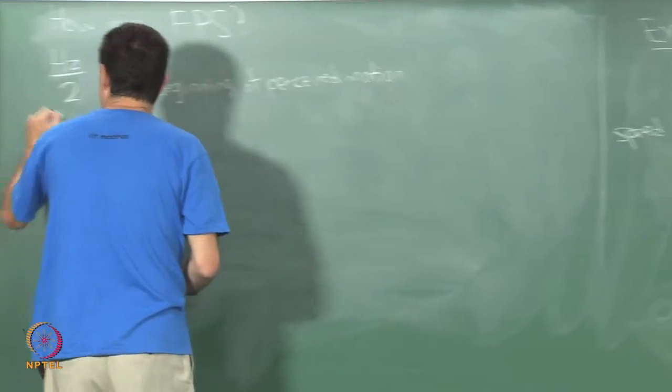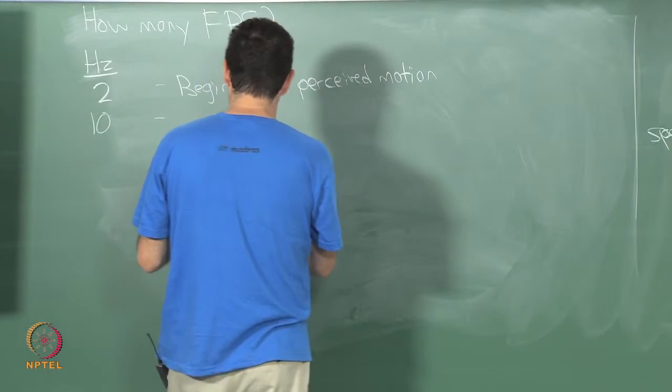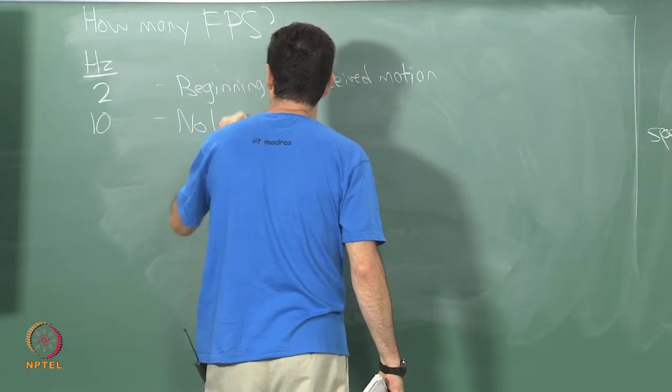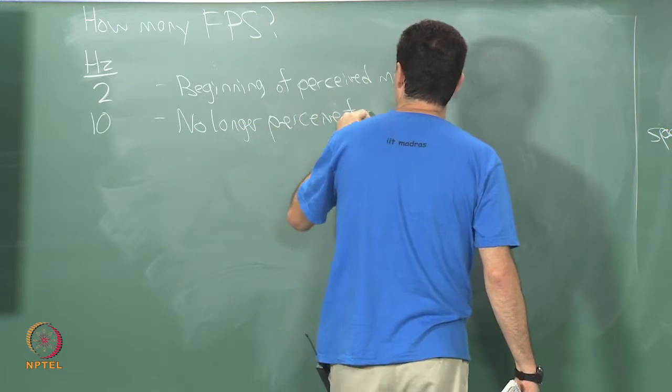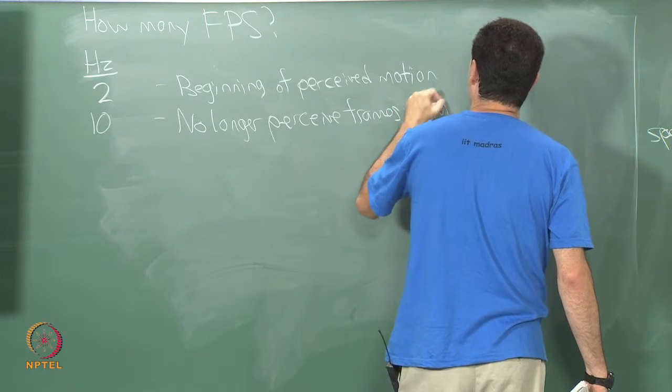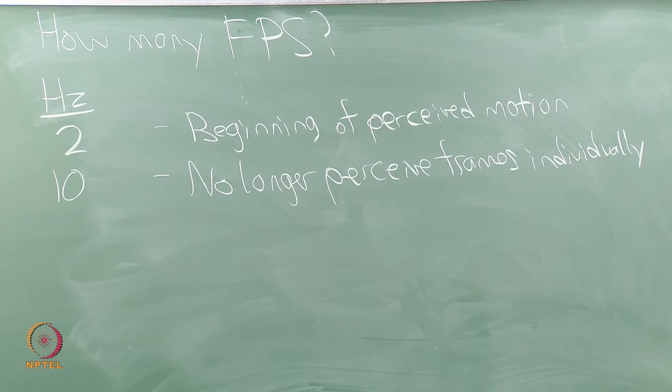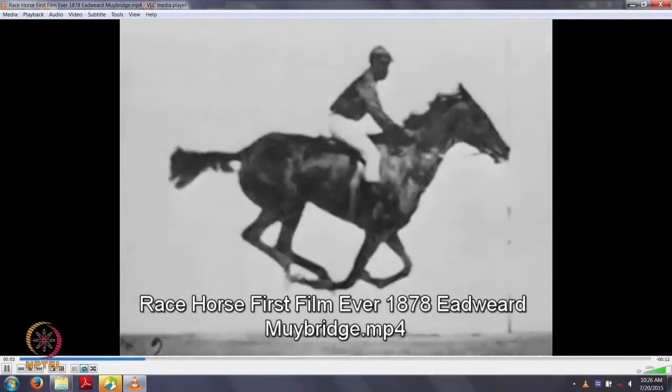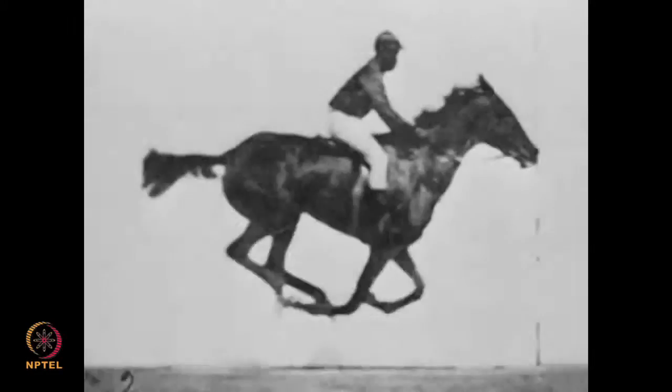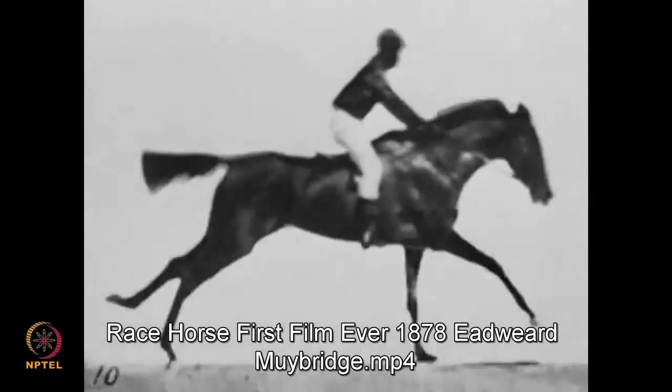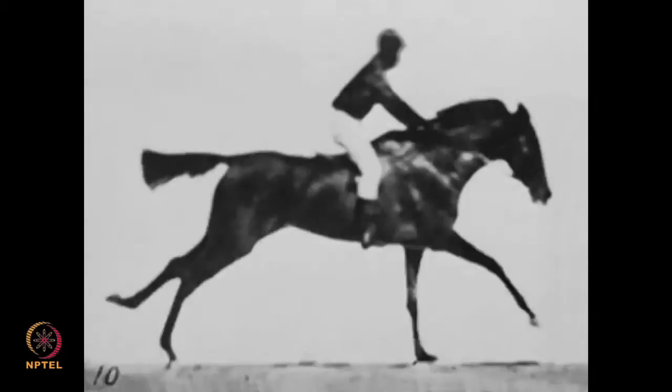If you get up to about 10 hertz, then you no longer perceive frames individually. One of the most famous videos of this—this is considered by many to be the oldest movie—this is by Edward Muybridge, the horse video from 1878. So, there are, I believe this was captured at 25 frames a second, but they could play it back at various speeds and they found that people cannot perceive individual images anymore once it is up to about 10 frames a second.